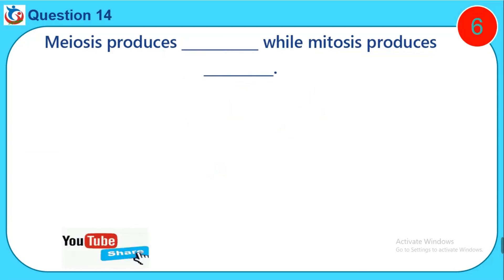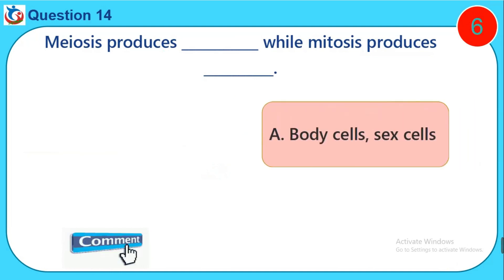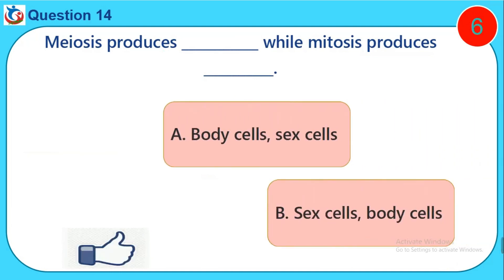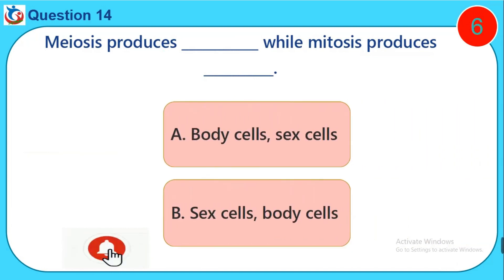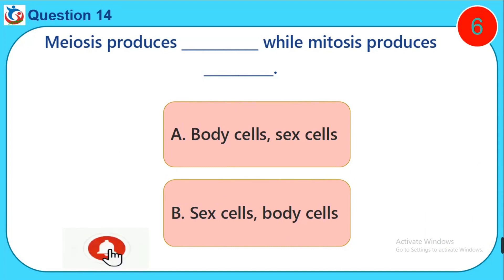Question fourteen: Meiosis produces dash, while mitosis produces dash. A) Body cells, sex cells, B) Sex cells, body cells.